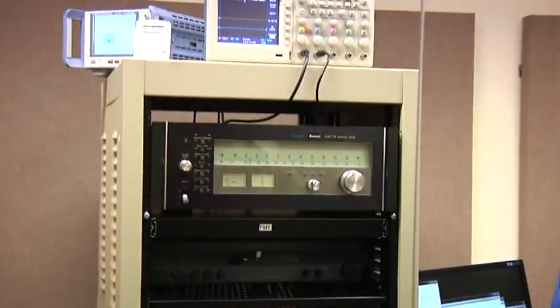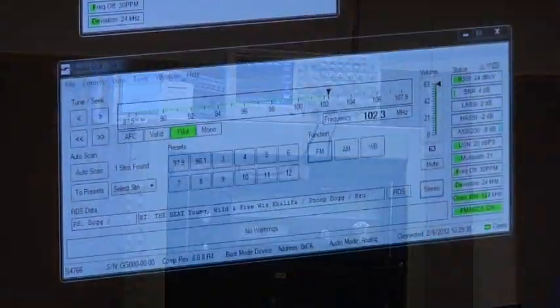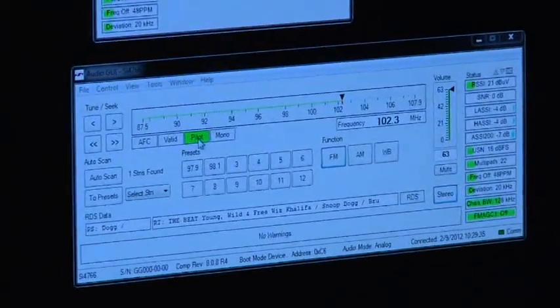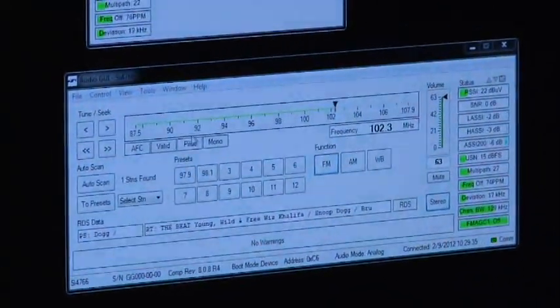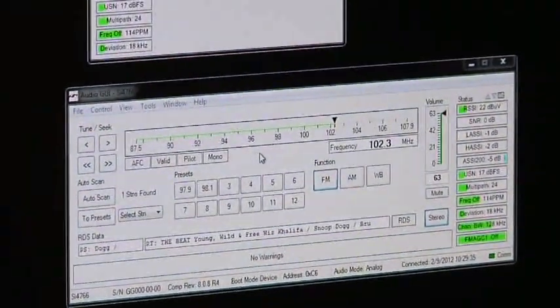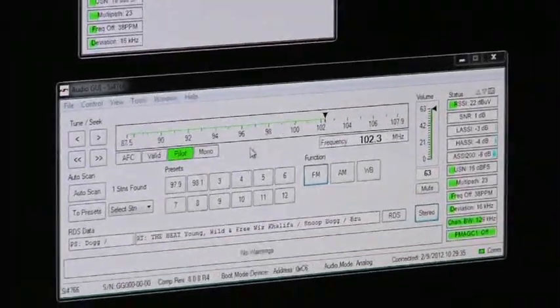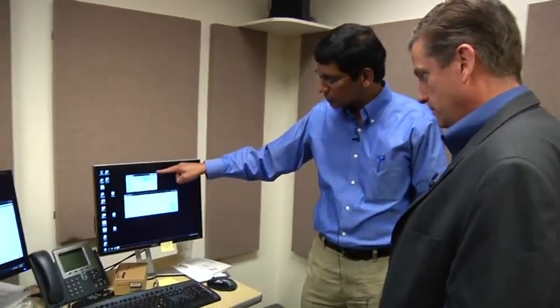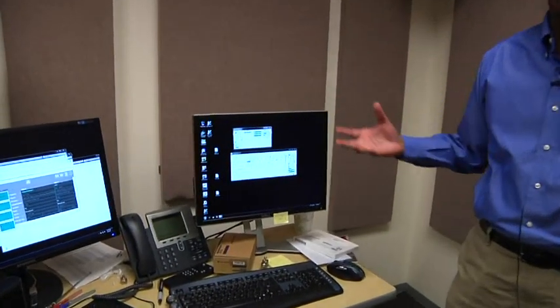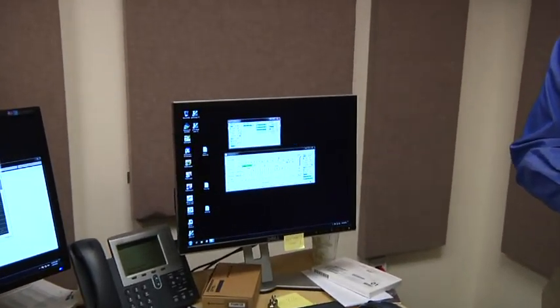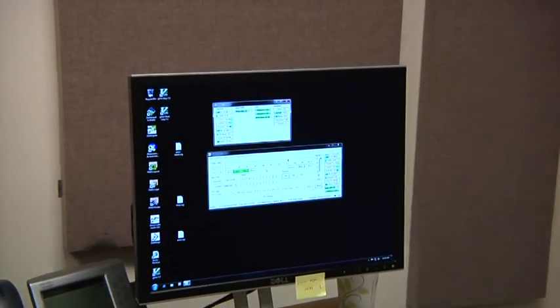And here is the graphical display for how a customer would basically view the performance of the tuner. So what we're showing here is basically receiving the signal here. And you can see all the various signal quality metrics that the chip through its on-chip DSP provides.